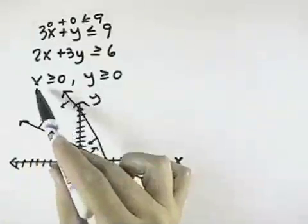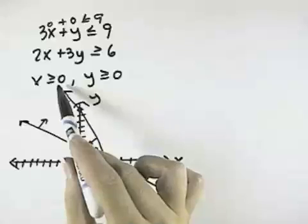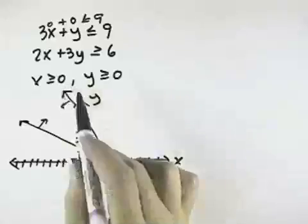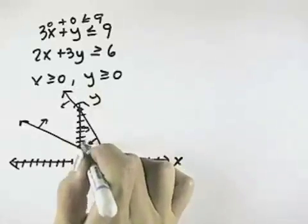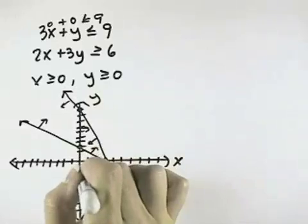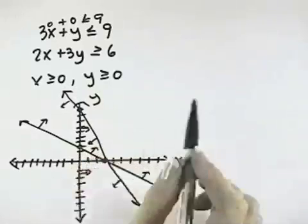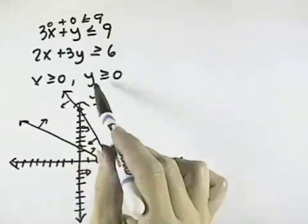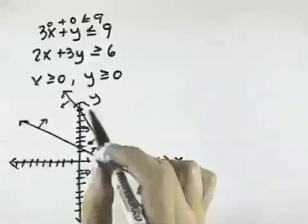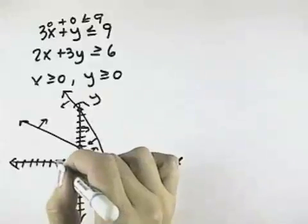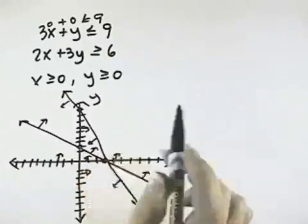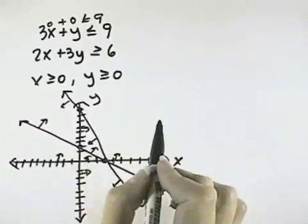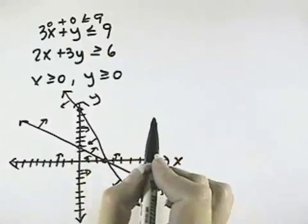Now finally, I want x to be greater than or equal to 0, so that means shade to the right of the y-axis. And y is greater than or equal to 0 means shade above the x-axis. And I need to figure out where all these overlap.